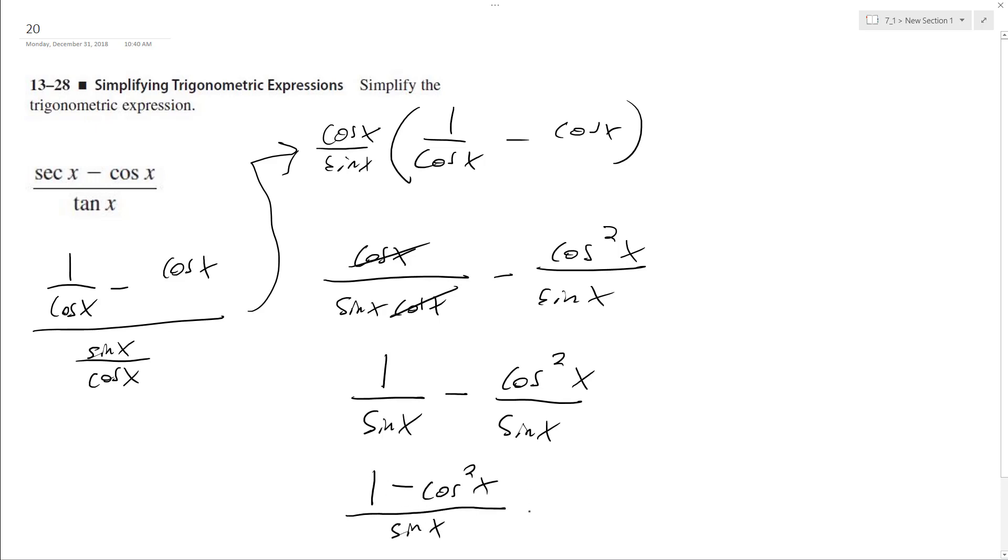1 minus cosine squared x is a trig identity. It's equal to sine squared x, and then we have that over sine x. So sine x squared is the same thing as sine x times sine x.